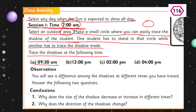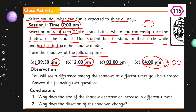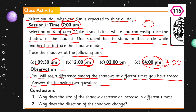Trace the shadows at the following times: 9:30 a.m., then 12:00 p.m., then 2:00 p.m., and around 3:00 p.m. to observe the differences. You will see differences among the shadows at different times. Answer the following questions: why does the size of the shadow decrease or increase at different times, and why does the direction of the shadow change?